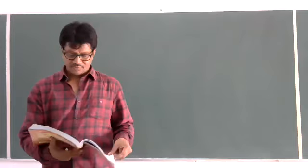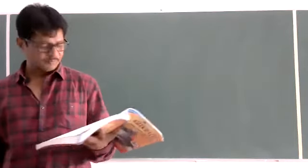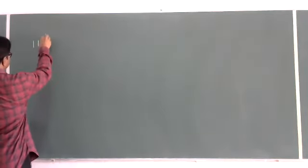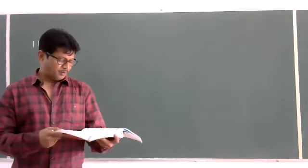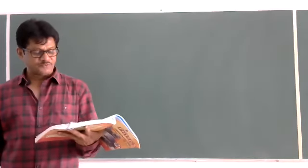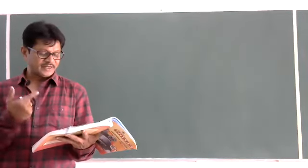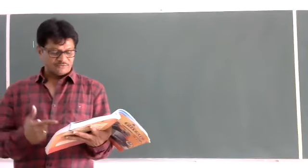Good morning students. Yesterday we discussed a few problems in the first chapter — I hope we completed up to problem 17. Now for the 18th problem: a point charge of 10 microcoulombs is at a distance of 5 centimeters directly above the center of a square of side 10 centimeters, as shown in the figure. What is the magnitude of electric flux through the square?